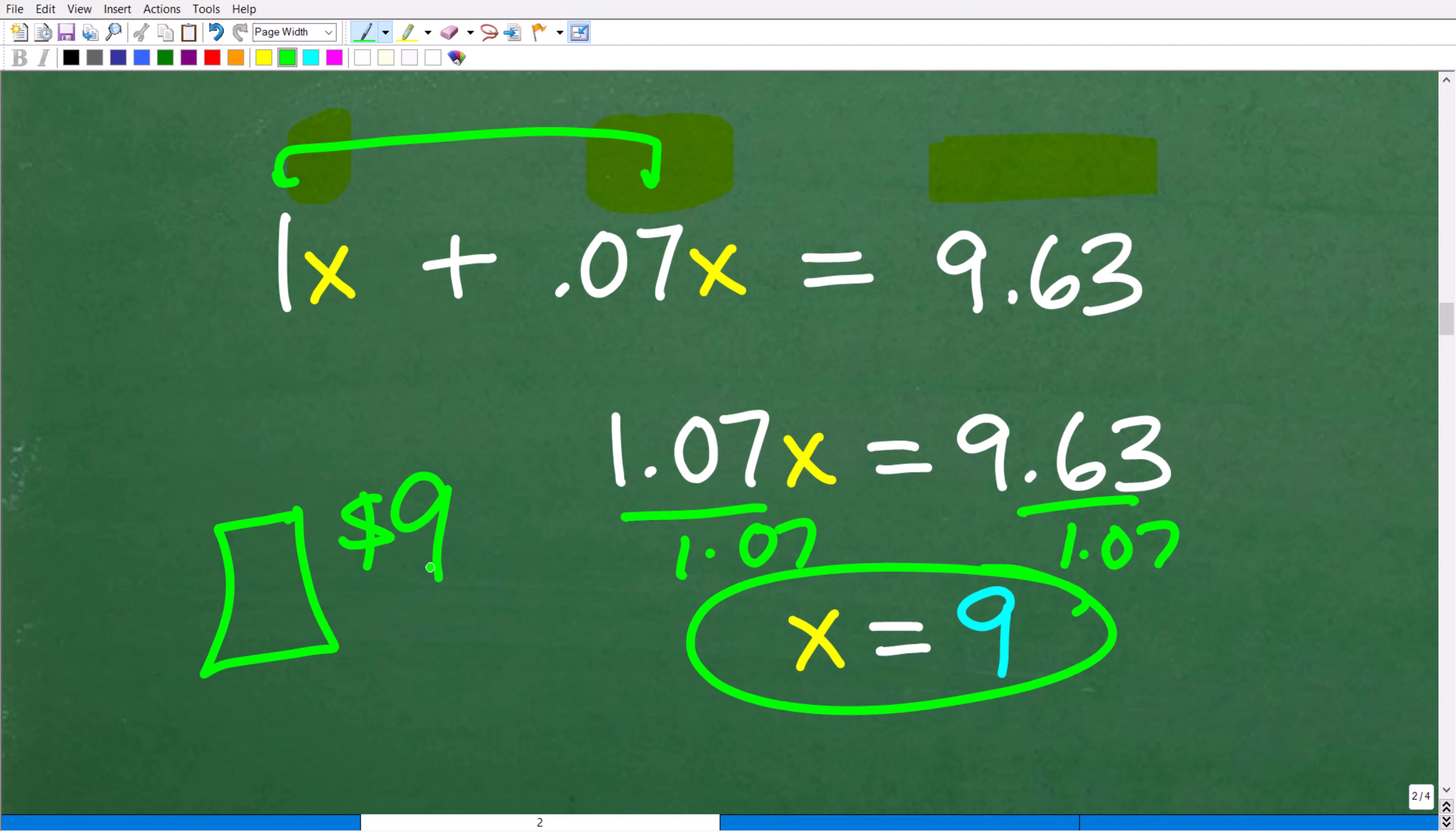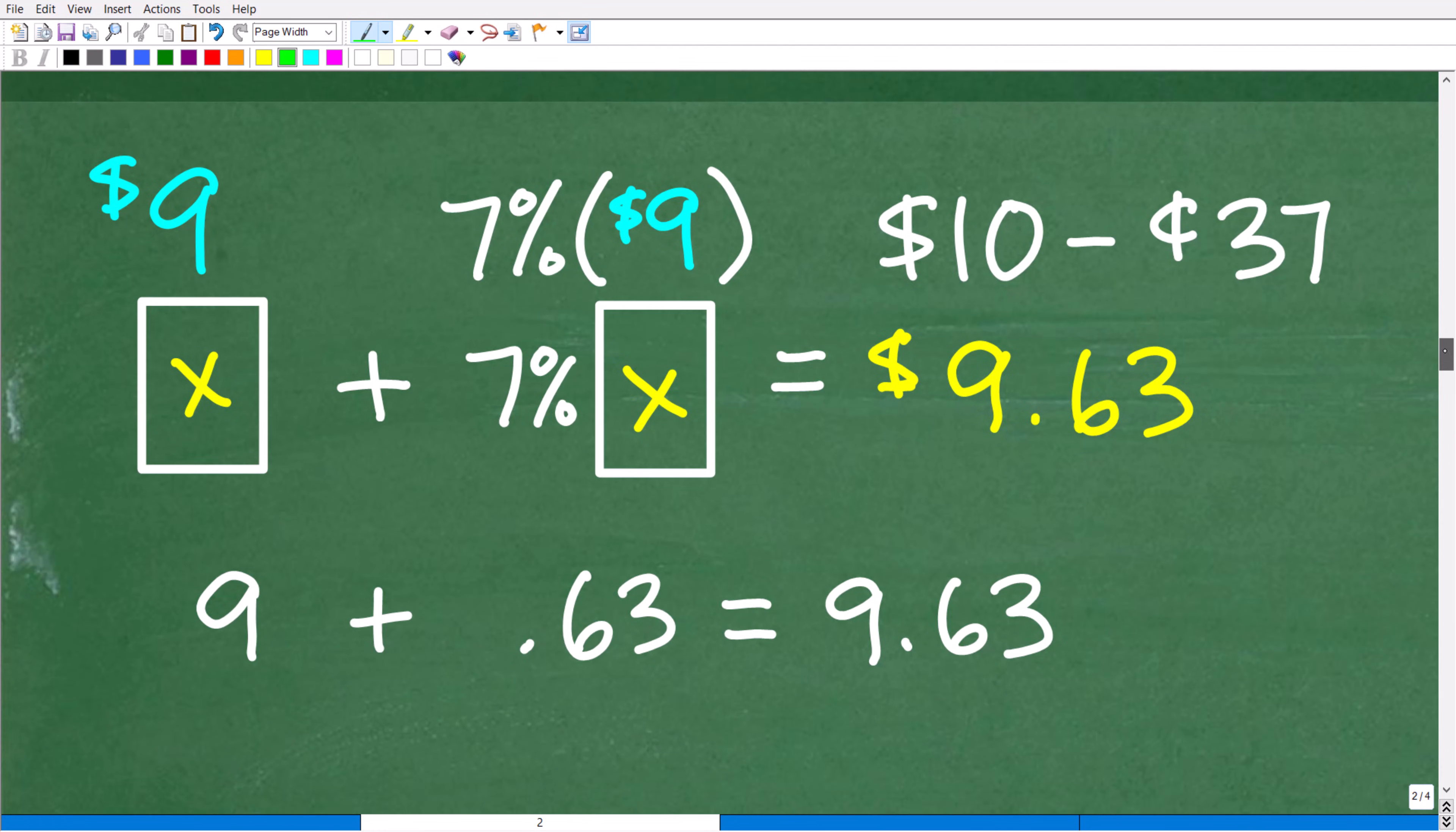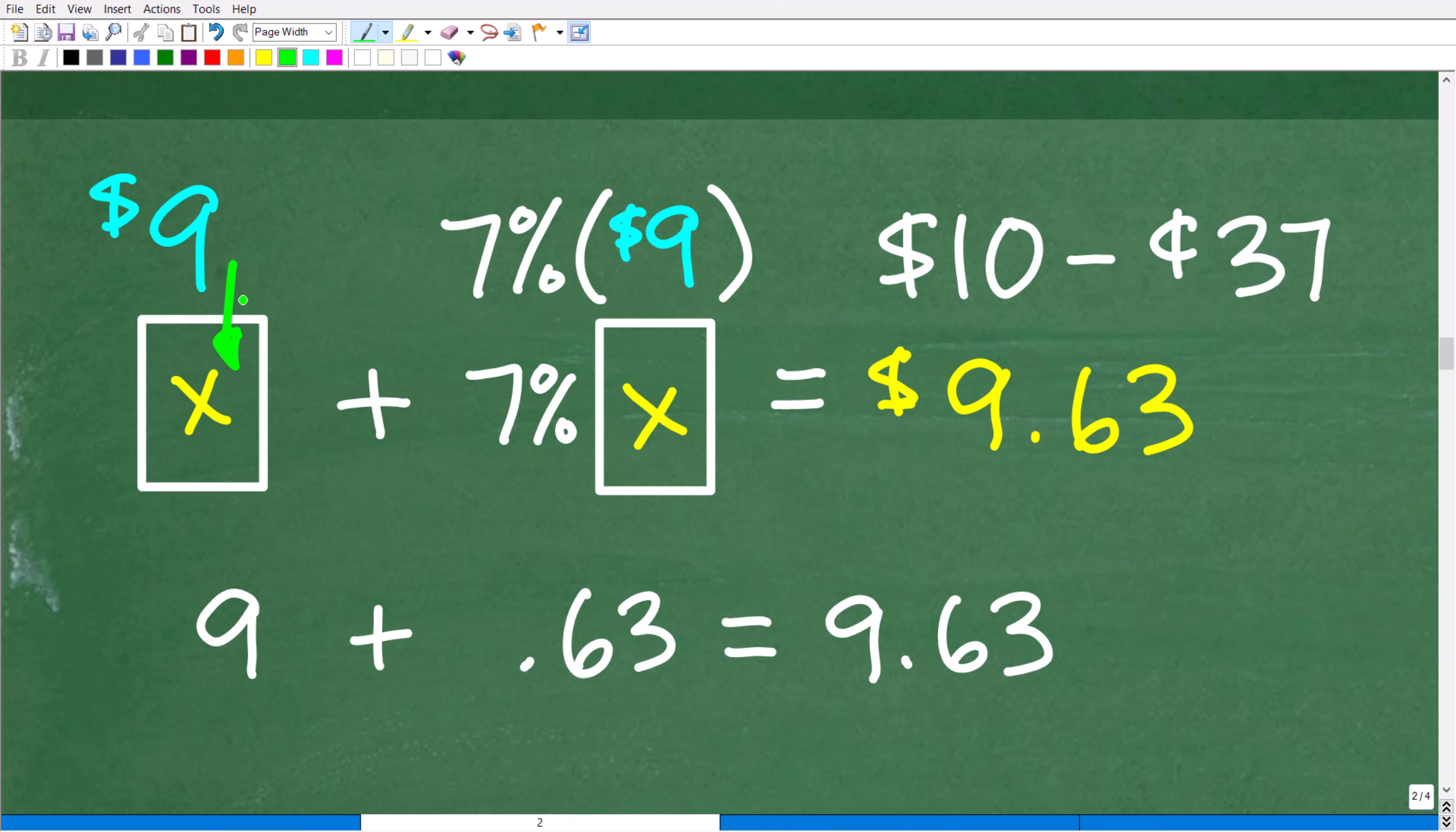But let's suppose we were like, well, I'm not sure about that. We can certainly check this. And let's go into that right now. Okay, so if our product was $9, okay, that's the cost of our product. Now let's calculate the tax on it. So that would be 7% of $9.